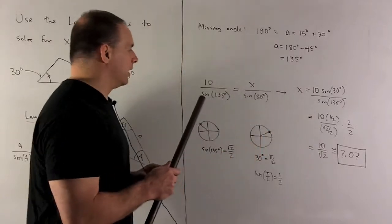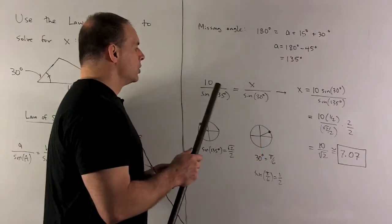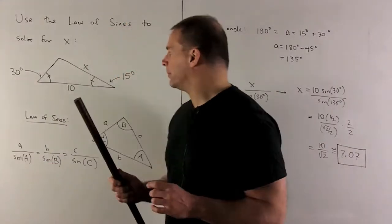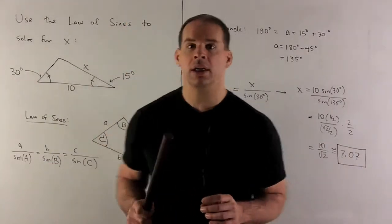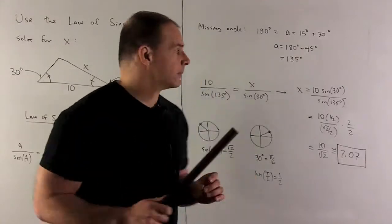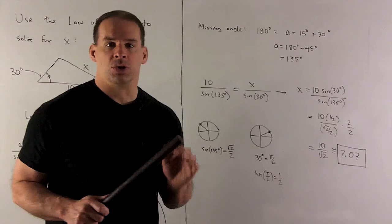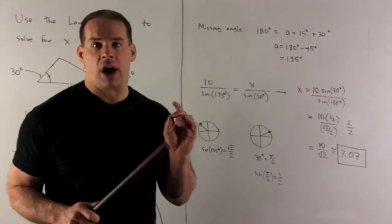Now we put that in our Law of Sines. We'll have 10 over sine of 135 degrees. 10 goes with our missing angle. And then X goes with 30 degrees. So we have this equal to X over sine of 30 degrees. Once we solve for these items, we get our X.